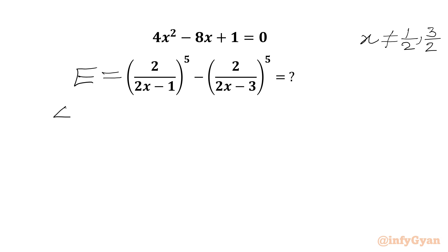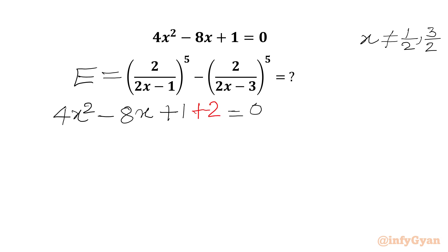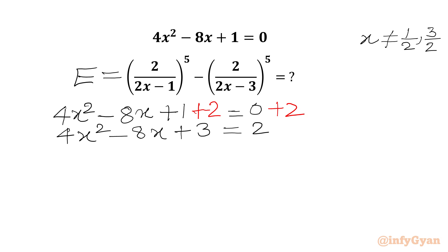We will begin with the given quadratic equation 4x² - 8x + 1 = 0. Now I will add 2 to both sides, so the LHS will become 4x² - 8x + 3 = 2.